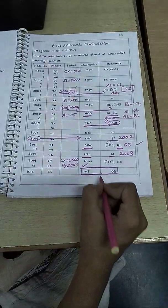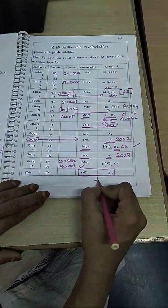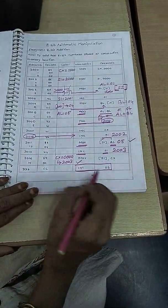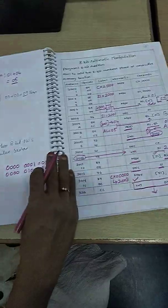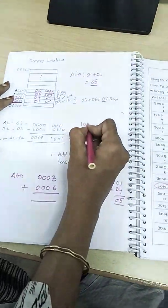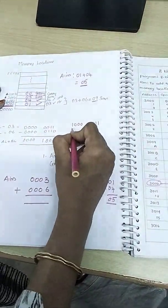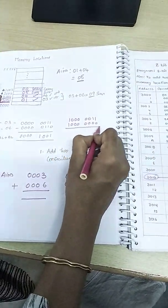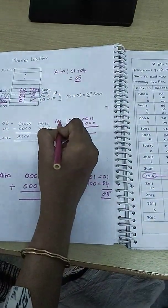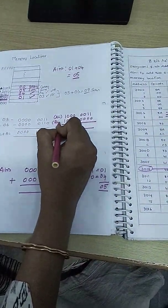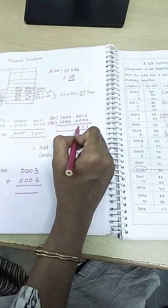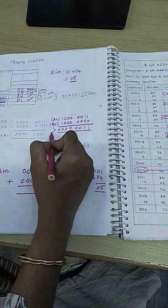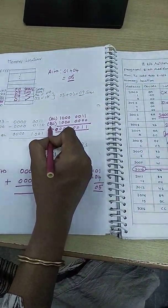Now consider what happens if there is a carry. Suppose we add 10000001 with 11000000. The first value is in AL and the second is in BL. Adding these two 8-bit numbers: 1 plus 1 gives 0 with a carry of 1, and the remaining bits produce 11000000 in AL with a carry out of 1.